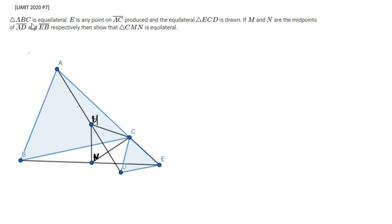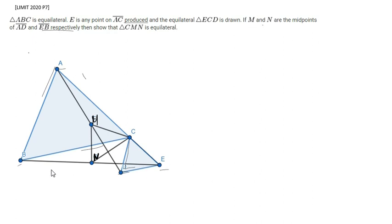The first problem: ABC is equilateral and E is any point. We have two equilateral triangles — ABC and ECD. We are given that M is the midpoint of AD and N is the midpoint of EB.